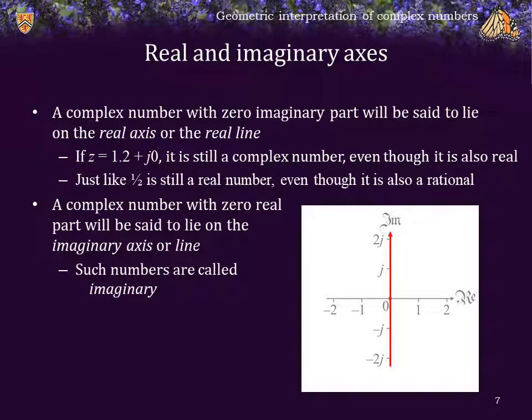A complex number with zero real part is said to lie on the imaginary axis, and such numbers are called imaginary. So, for example, here we see 0 minus j times 1.8, or just negative j times 1.8.